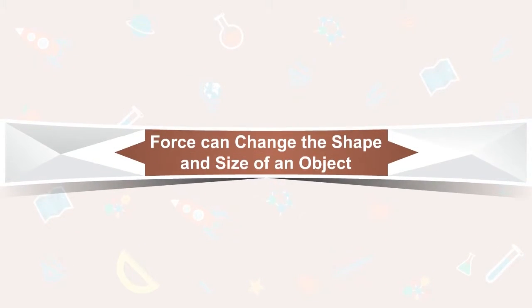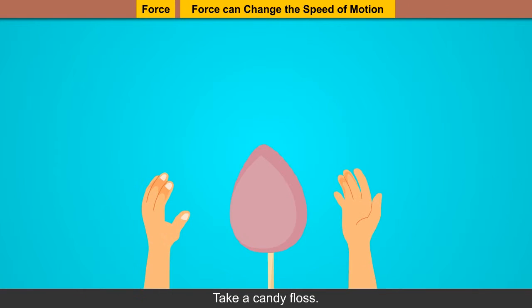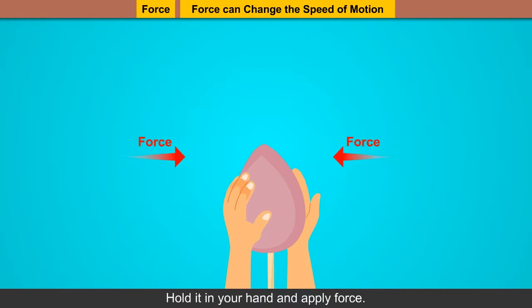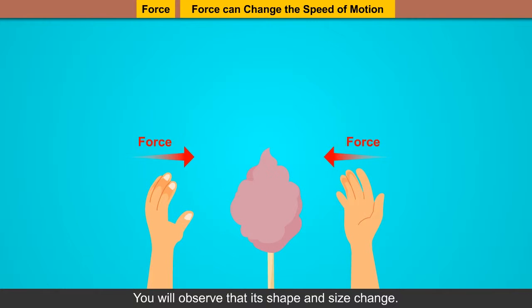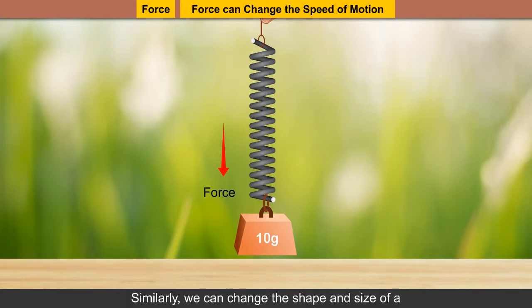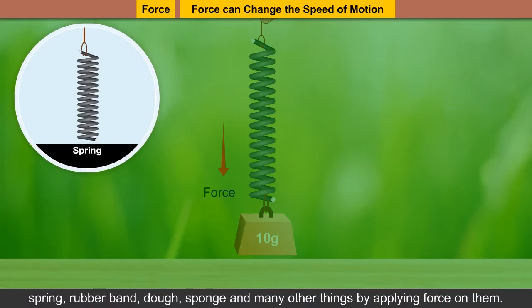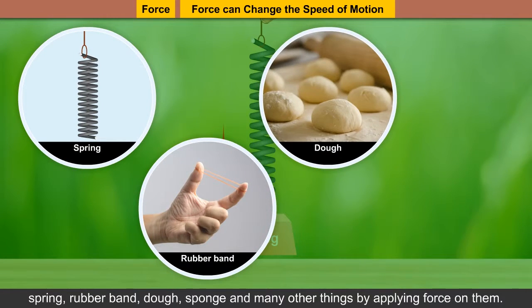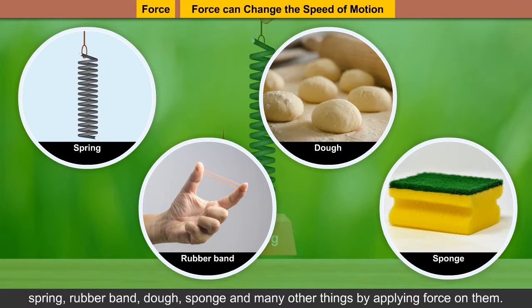Force can change the shape and size of an object. Take a candy floss — hold it in your hand and apply force. You will observe that its shape and size change. Similarly, we can change the shape and size of a spring, rubber band, door, sponge, and many other things by applying force on them.